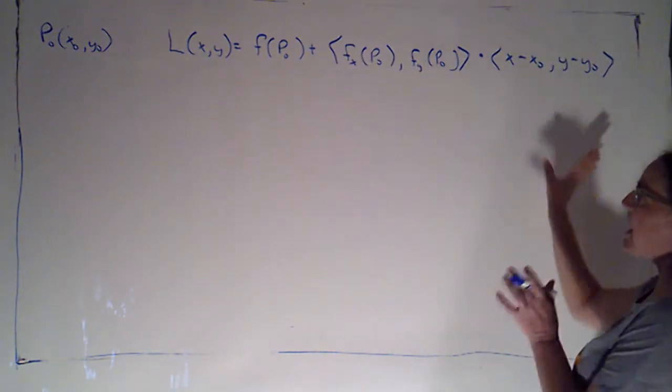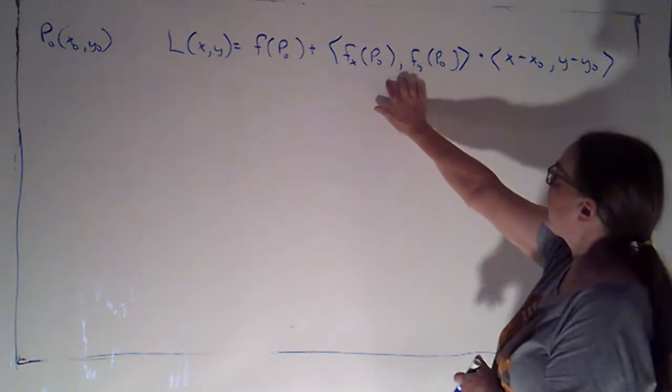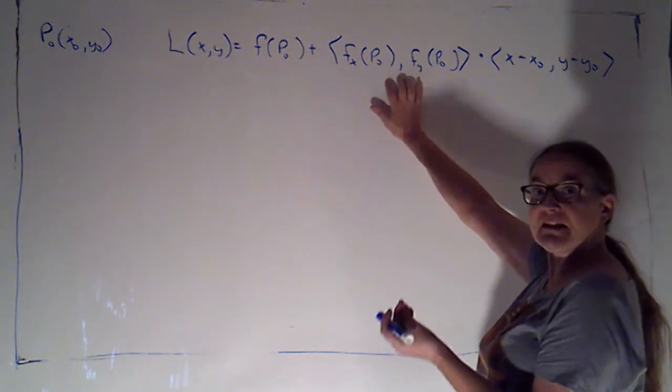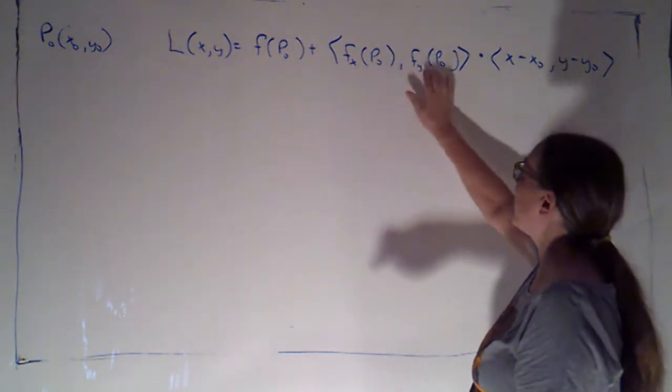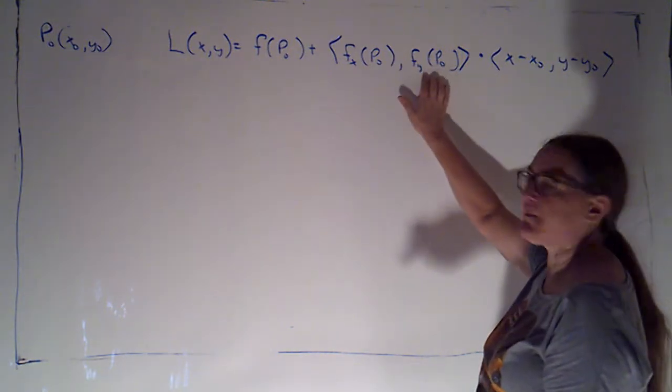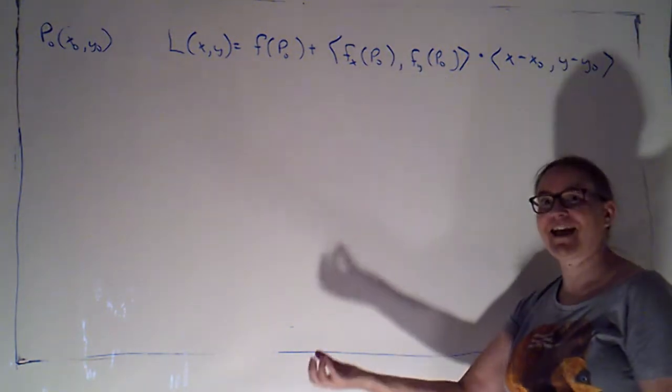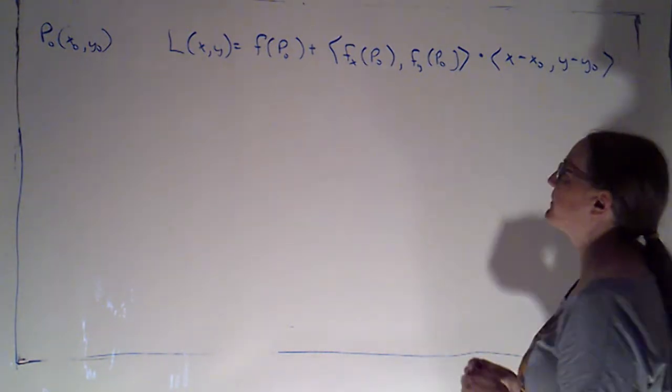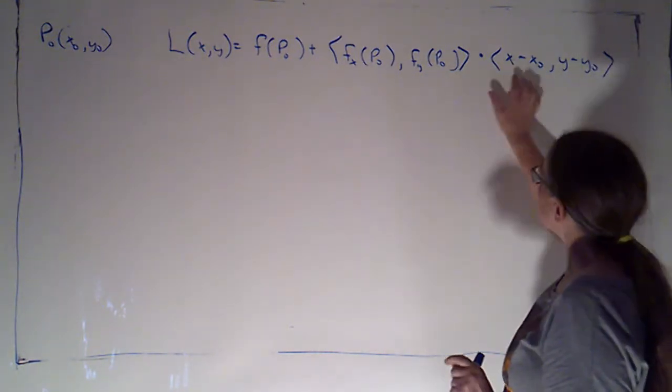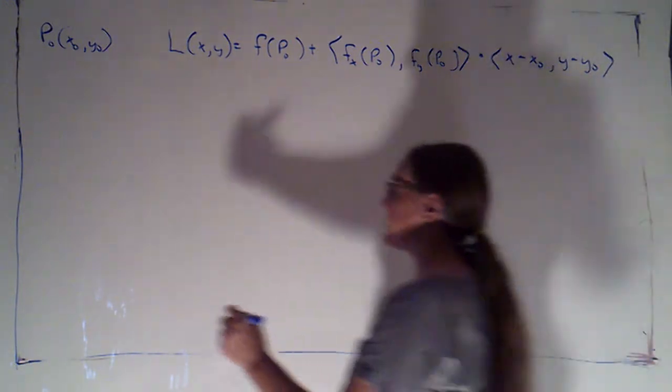And we calculated the delta z by dotting these two vectors. This vector basically gives me my rates of change, that's the two partial derivatives evaluated at my point, and then this vector gives me the amounts of change, first in x and then in y. Well, I can actually give those vectors names.